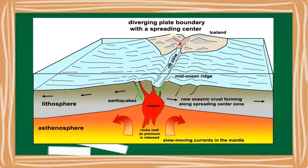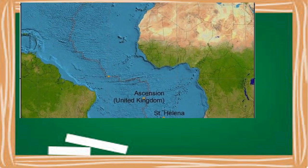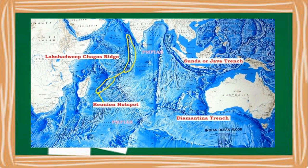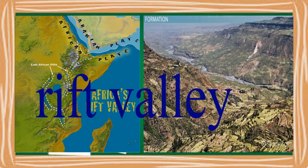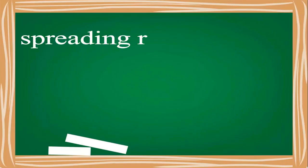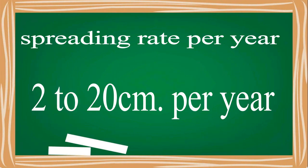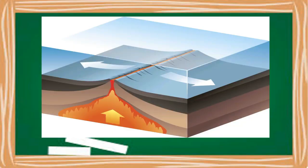As the plates separate, new material from the mantle goes up to fill the gap. These materials slowly cool to produce new ocean floor. An example of a divergent boundary is the Mid-Atlantic Ridge, a divergent plate boundary located along the floor of the Atlantic Ocean. There are also mid-ocean ridges at the Indian Ocean and Pacific Ocean. Divergent boundaries also create rift valleys and new oceans; the rift valley in East Africa is the result of a divergent boundary.